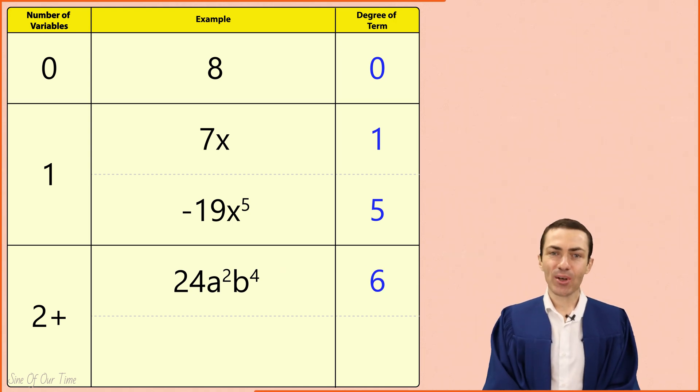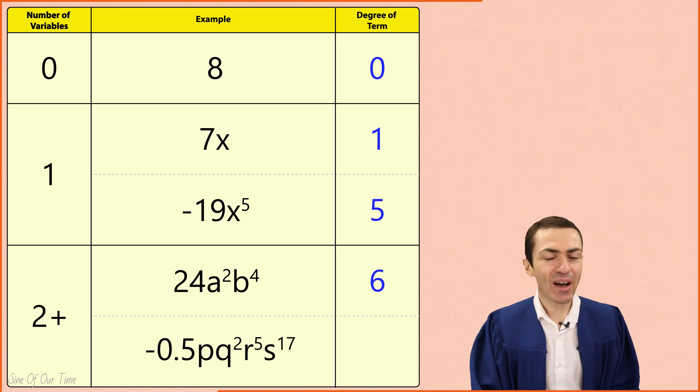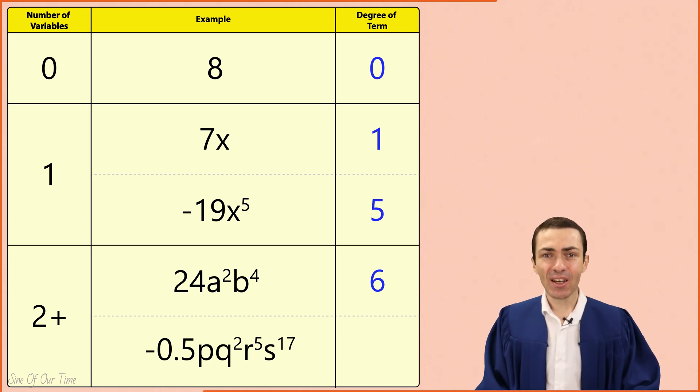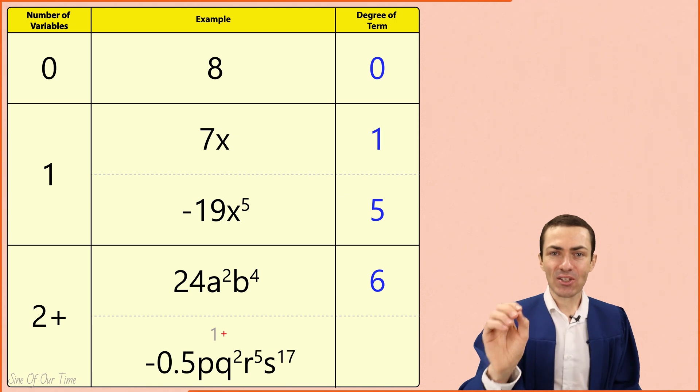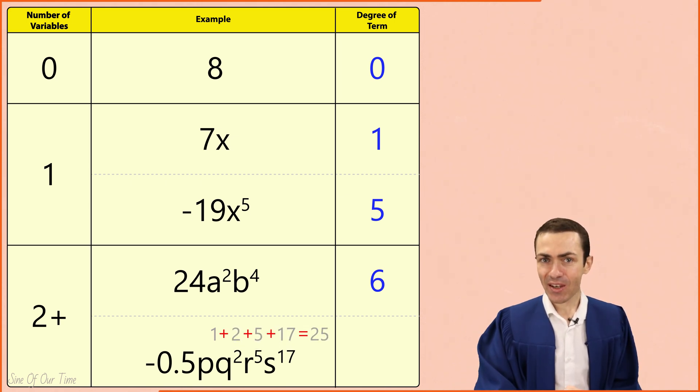Or if we are given negative 0.5 p q squared r to the power of 5 s to the power of 17 simply take 1 plus 2 plus 5 plus 17 to give us 25 and that is the degree of this term.